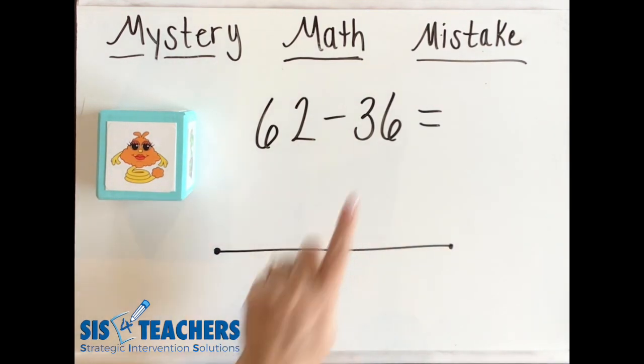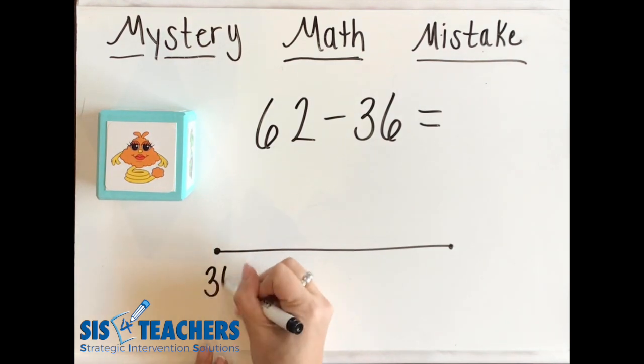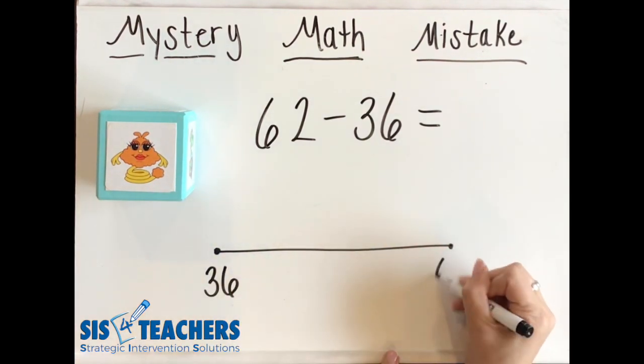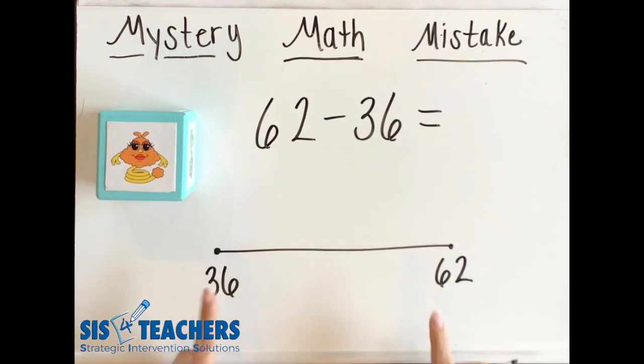So I'm going to put this second number at the beginning of my number line and then my first number at the end of my number line. Springling wants to hop between all of these parts so that she can figure out the distance between the two numbers.